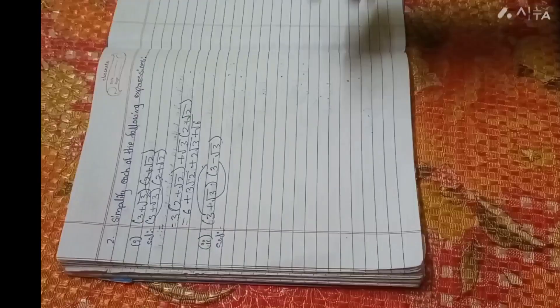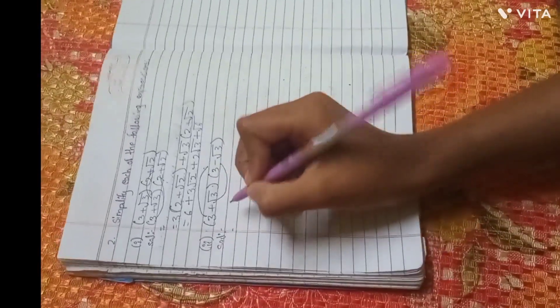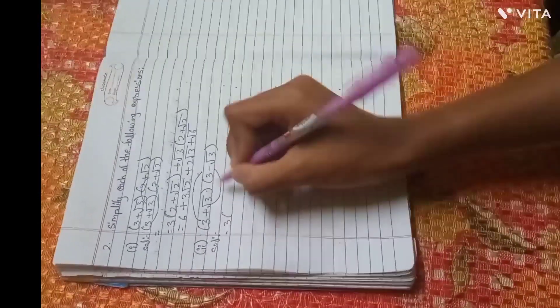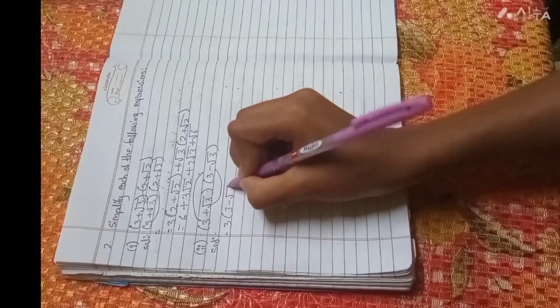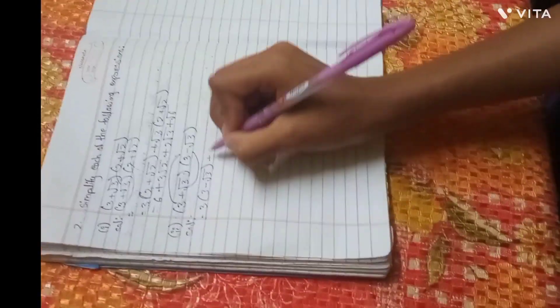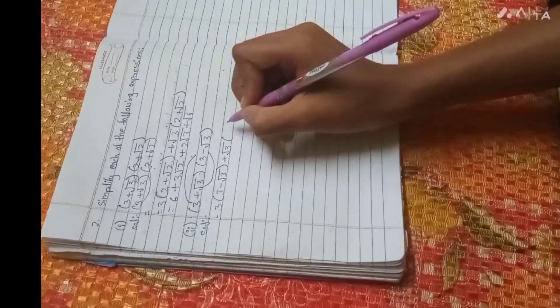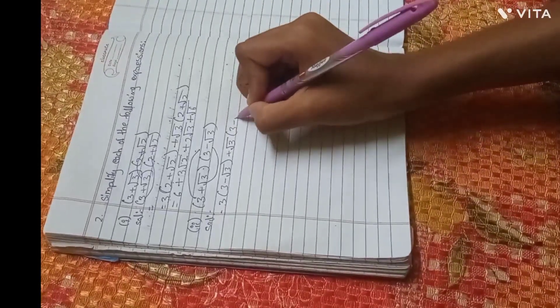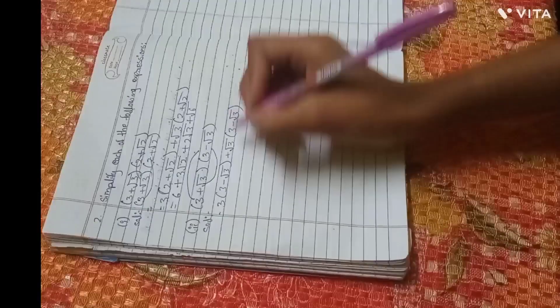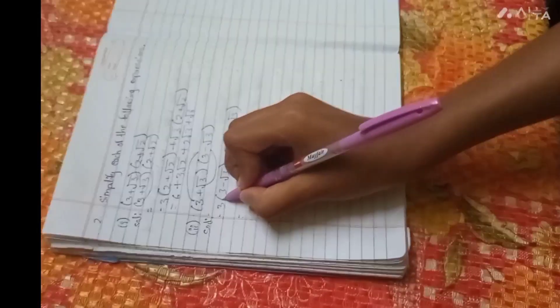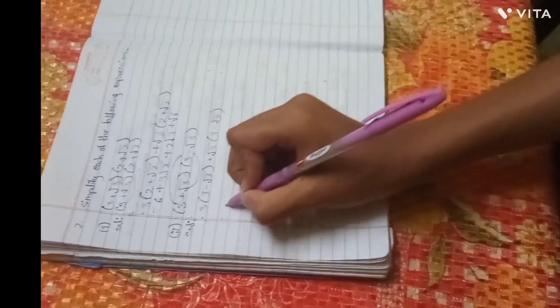3 plus root 3, bracket 3 minus root 3. We will multiply. 5 plus root 3, bracket 3 minus root 3. So I know that the bracket is multiplied. 3 times 3 is 9.